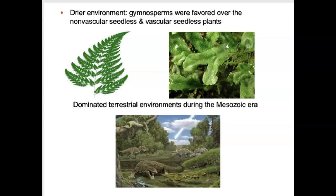If you ever see a movie with dinosaurs running around in grass, it's not correct. Grass is a flowering plant — it's a seed-producing plant, an angiosperm. It didn't exist during the Mesozoic. This window of the earth's history gave rise to the earliest seed plants, but they were, again, these gymnosperms that we'll be talking about in a little bit.